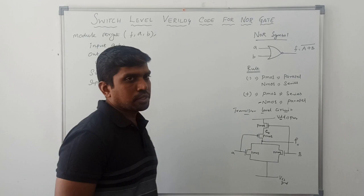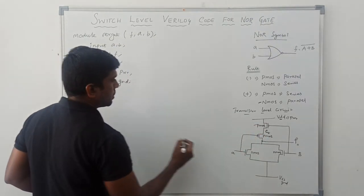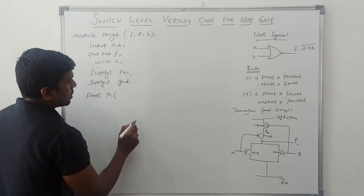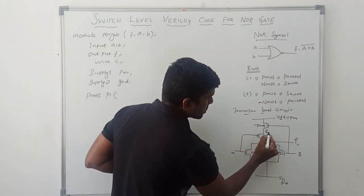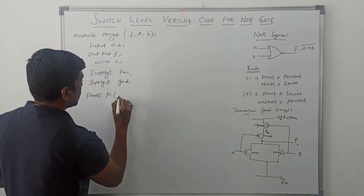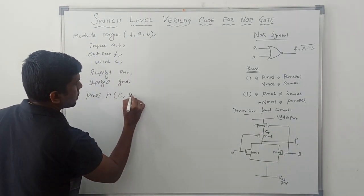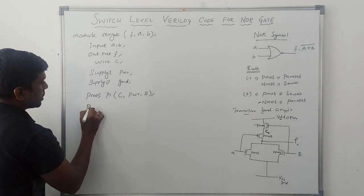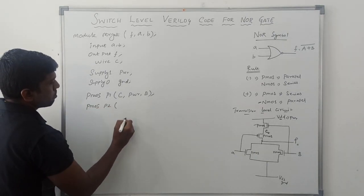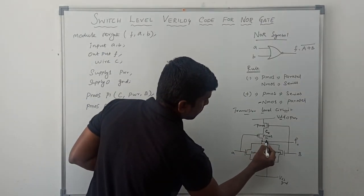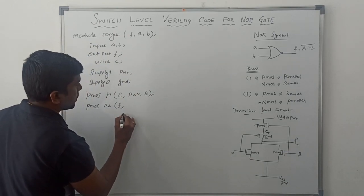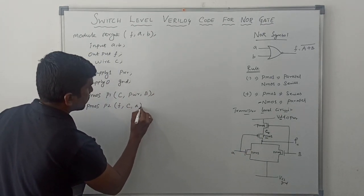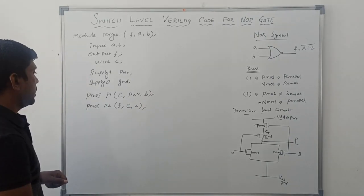Now I am going to declare the two P-MOS transistors. For the first P-MOS transistor, the keyword is pmos, instance name P1. In this P-MOS transistor, the output is C and the inputs are power and B, so: pmos P1 (C, power, B), where B is the controlling input. Then for the second P-MOS, pmos P2: output is F, and inputs are C and A, so pmos P2 (F, C, A).